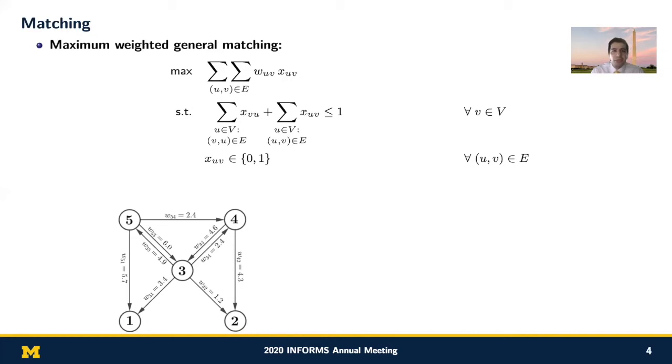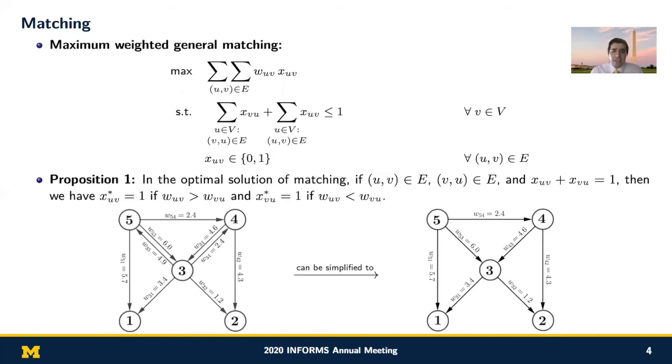I just want to mention that there might be two edges between every two nodes. As you see, between node 3 and node 4, there are two edges. This means that both of these users are capable of giving a ride to the other one. It turns out that we can use proposition 1 described here to reduce the size of the graph by picking the edge that has a higher weight between every two vertices. Doing this does not compromise the optimality of the solution.